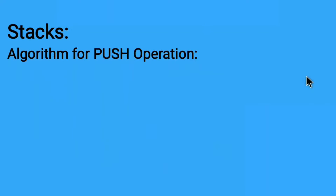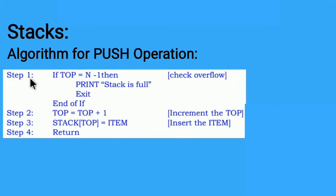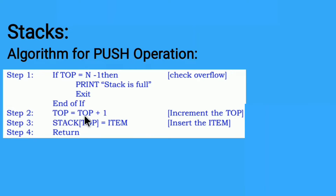Now the algorithm for push operation. Step one: if top is equal to n minus one — meaning the top pointer is pointing to the last element — then the stack is full, it prints 'stack is full' and exits. Step two: if that condition is not true, then top is equal to top plus one — we increment top.